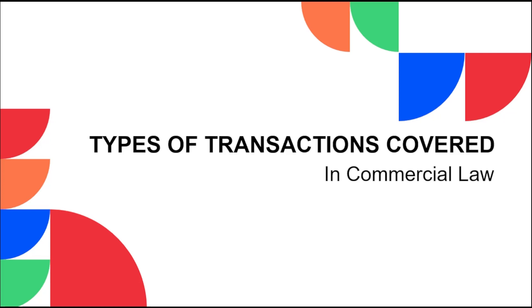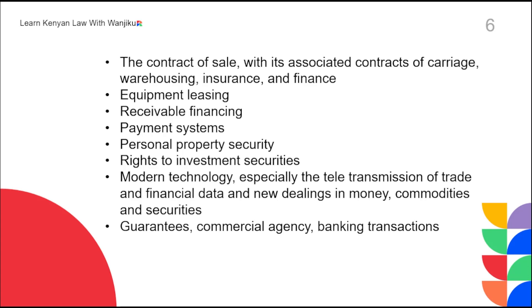We now ask ourselves: what types of transactions are covered in commercial law? Some examples include equipment leasing — for example, leasing your camera equipment to someone — receivable financing, payment systems, personal property security rights, investment in securities, modern technology especially the teletransmission of trade and financial data, and new dealings in money, commodities, and securities.